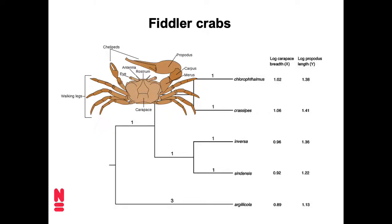In this case we're looking at five species of fiddler crabs — the crabs with one big pincer that they wave around. For these five species, two phenotypic traits were measured: one is the breadth of the carapace, which is like the main shield on the body, and the other is the length of the propodis, which is part of the big pincer. These values are log-transformed, and we want to see if there's some correlation between them.